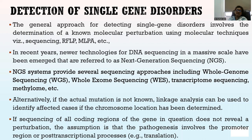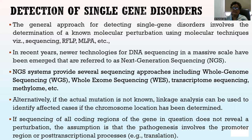Detection of single gene disorders: the general approach involves determination of a known molecular perturbation using molecular techniques — for example, sequencing, RFLP, MLPA, etc. In recent years, newer technologies for DNA sequencing on a massive scale have emerged, referred to as next-generation sequencing. Next-generation sequencing systems provide several approaches, including whole genome sequencing, whole exome sequencing, transcriptome sequencing, methylome, etc. Alternatively, if the actual mutation is not known, linkage analysis can be used to identify affected cases if the chromosomal location has been determined. If sequencing of all coding regions does not reveal a perturbation, the assumption is that the pathogenesis involves the promoter region or post-transcriptional process.